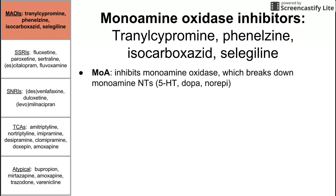The mechanism of action for these is that they inhibit monoamine oxidase, as the name implies, and monoamine oxidase breaks down the monoamine neurotransmitters — which are serotonin (5-HT), dopamine, and norepinephrine. So the monoamine oxidase inhibitors allow these neurotransmitters to exist longer by stopping their breakdown.